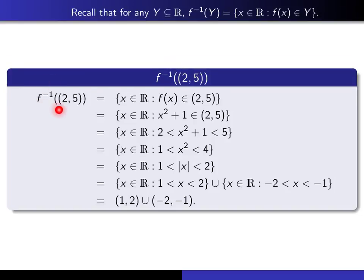Okay, we start with the working definition of f inverse of the interval from 2 to 5. It's the set of all real numbers x such that f of x is an element of that interval. Now I fill in that f of x is x squared plus 1, and apply the working definition: x squared plus 1 is bigger than 2 and less than 5. Subtracting 1 gives x squared between 1 and 4. Taking square root — since both sides are positive — gives absolute value of x between 1 and 2. That means either x is between 1 and 2, or x is between minus 2 and minus 1. The first set is the open interval from 1 to 2, and the second is the open interval from minus 2 to minus 1. Their union is the inverse image.